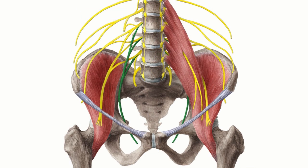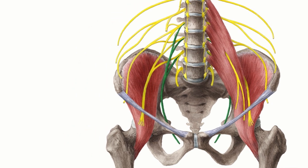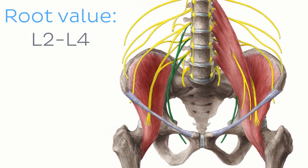With regards to its innervation, the adductor minimus muscle is innervated by the posterior division of the obturator nerve L2 to L4, which is this nerve seen here highlighted in green.